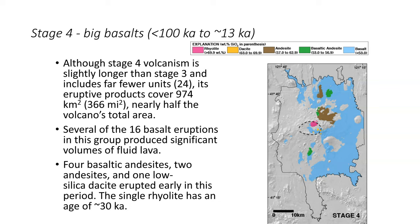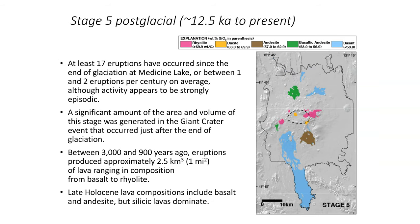Stage 4, from 100,000 to 13,000 years ago, saw a lot of basaltic material. This stage is longer than Stage 3 but includes fewer eruptive units. Several of the 16 basaltic eruptions produced significant volumes of fluid lava, along with four basaltic andesites, two andesites, and one low-silica dacite erupted early in the period. The single rhyolite has an age of about 30,000 years.